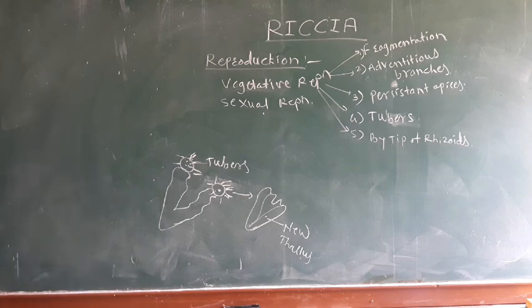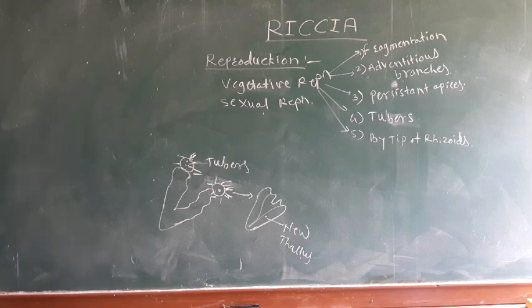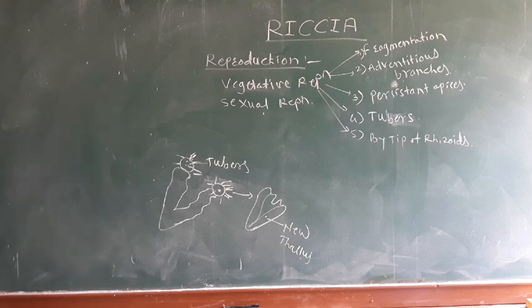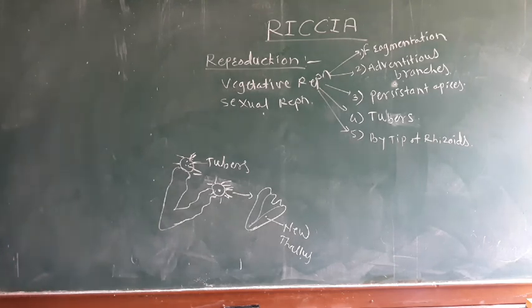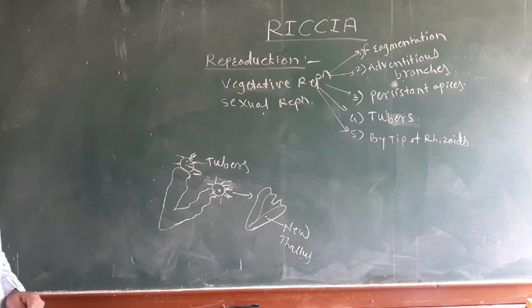In some species of Riccia, such as Riccia glauca, the apices divide repeatedly to form a mass of cells. These cells possess chloroplasts, and having chloroplasts gives them the capacity to grow into a new thallus. In this way, vegetative reproduction by rhizoids also occurs. To summarize, the methods of vegetative reproduction in Riccia are: fragmentation, adventitious branches, persistent apices, tubers, and reproduction via rhizoids.